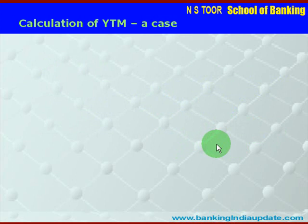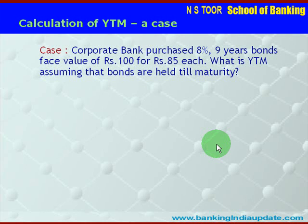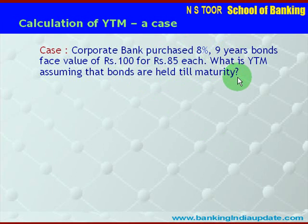Now let us calculate YTM. Here is the problem: Corporate Bank purchased 8%, 9-year bonds with a face value of Rs. 100 for Rs. 85 each. Calculate the YTM assuming the bonds are held till maturity. The bank is purchasing a bond with a face value of Rs. 100 but pays only Rs. 85. The coupon rate is 8% and the maturity period is 9 years.